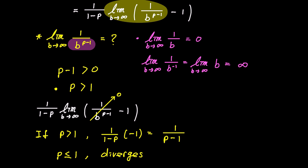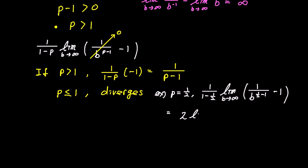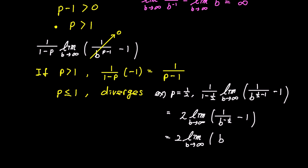Shall we consider an example? If the value of p is less than or equal to 1, such as one half, then the expression becomes 1 over 1 minus one half times the limit of 1 over b to the power of one half minus 1, minus 1, which simplifies to 2 times the limit of 1 over b to the power of negative one half minus 1. This further simplifies to 2 times the limit of b to the power of one half minus 1. As b approaches infinity, this value ultimately diverges to infinity.